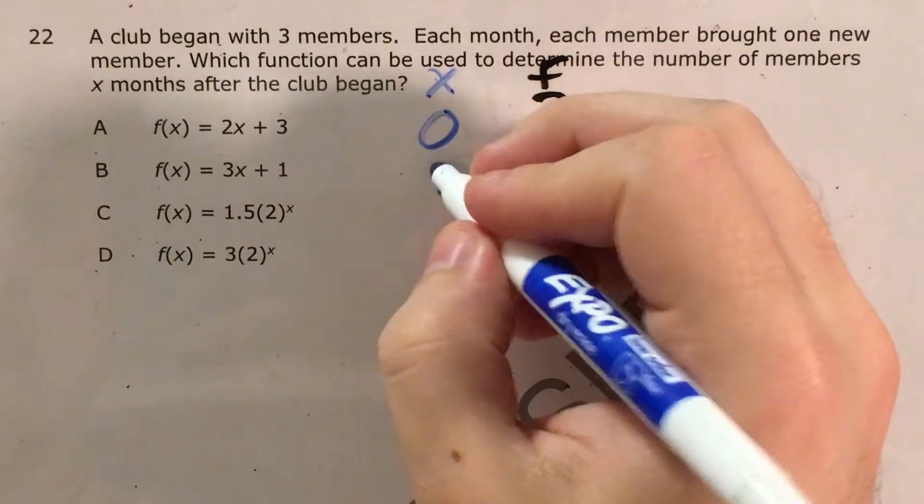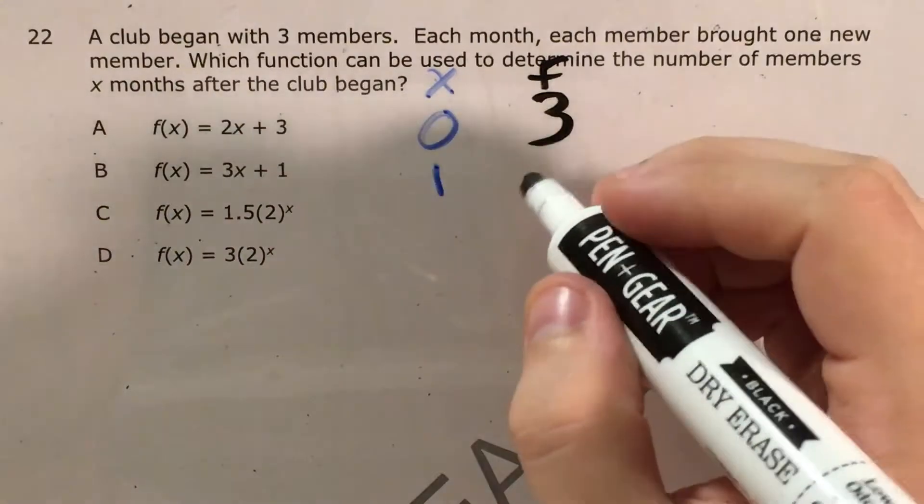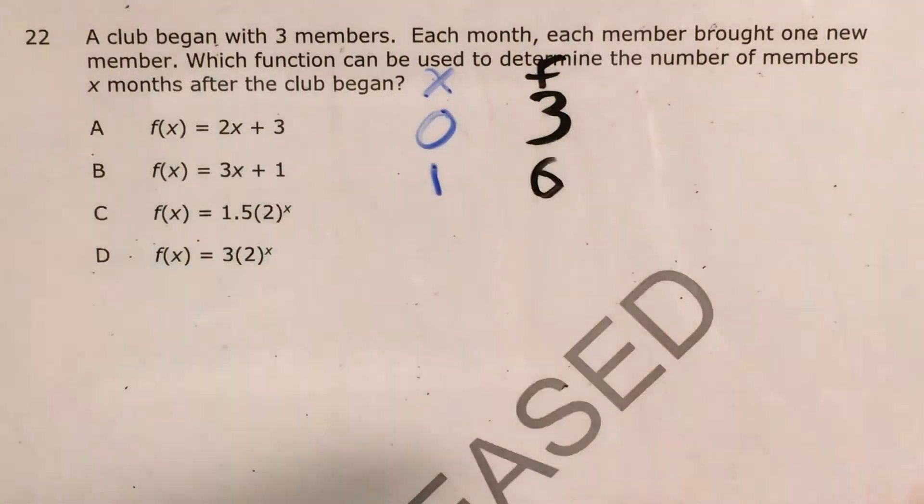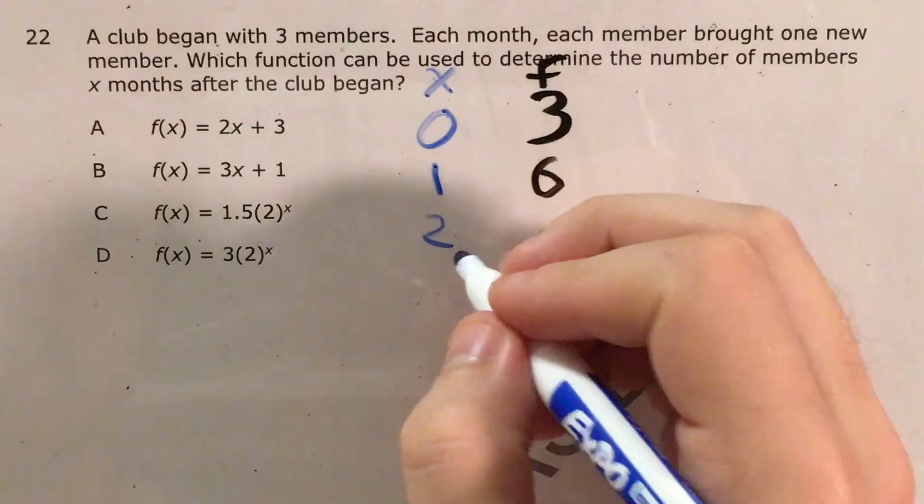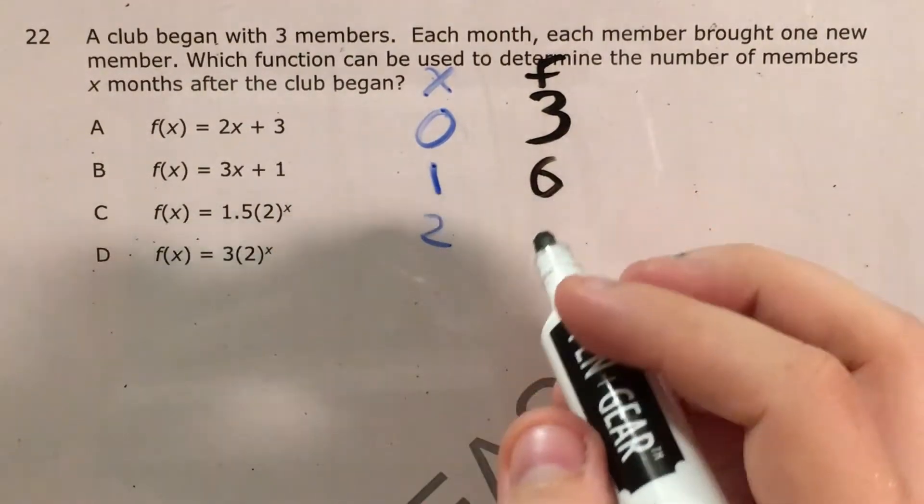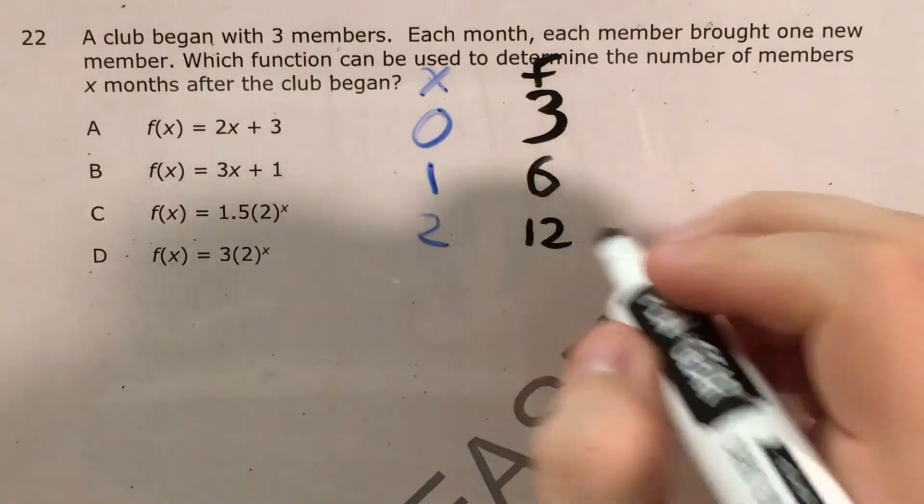If it's one month, every member's brought another new member, so three times two would give me six members now. After two months, x is two. If six members each brought one member, that's twelve.